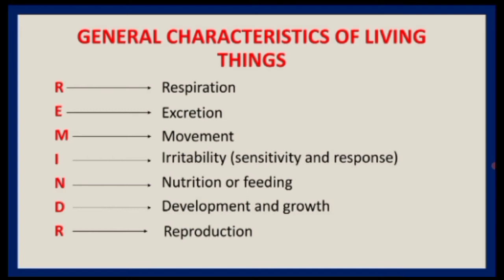Green plants that prepare their own food through photosynthesis use a mode of nutrition called holophytic or autotrophic nutrition — they are self-feeding. Animals get their food from plants, and this mode of nutrition is known as holozoic or heterotrophic nutrition.